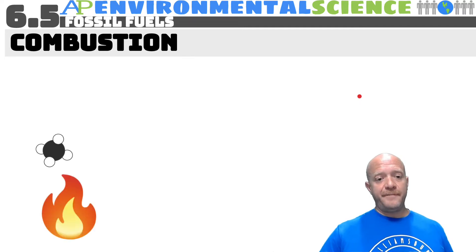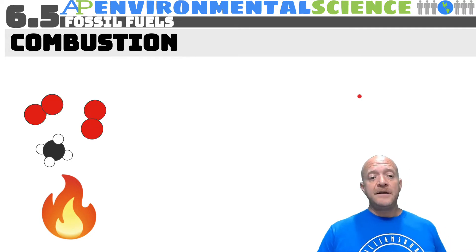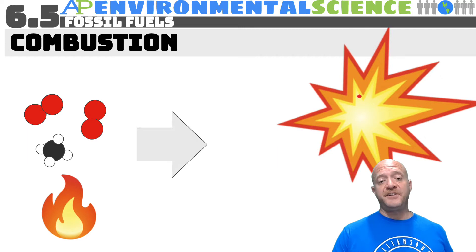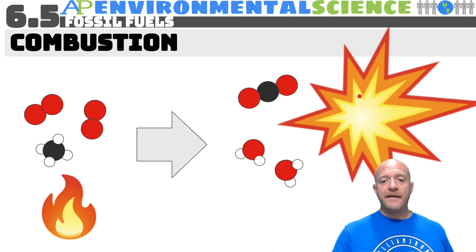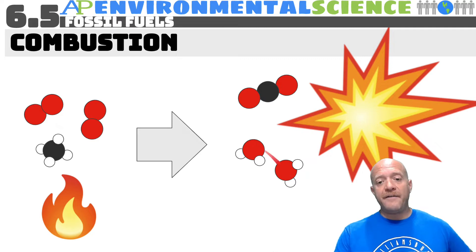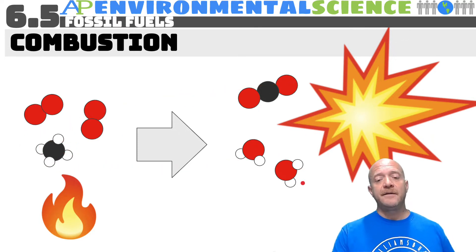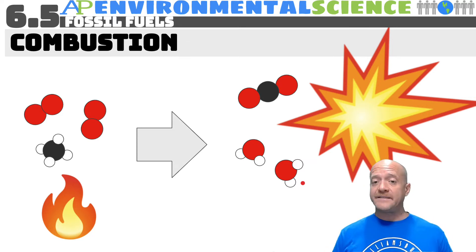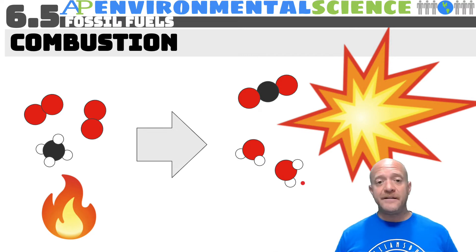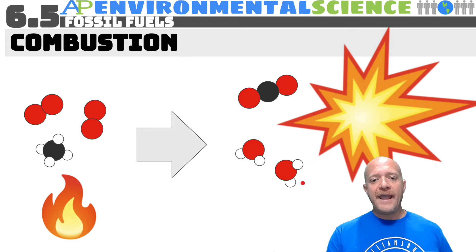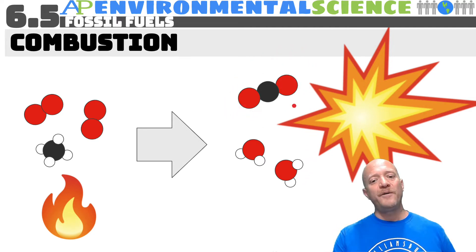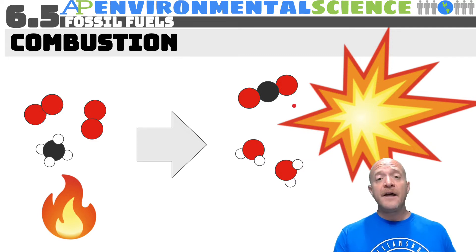When you burn methane, you have to have oxygen present. Burning methane plus oxygen gives you a lot of energy, but also water and carbon dioxide. This demonstrates conservation of matter: one carbon in, one carbon out; four oxygens in, four oxygens out; four hydrogens in, four hydrogens out. If you're burning pure methane, there are no pollutants or particulate matter released. The only problem is the carbon dioxide, and burning methane produces a lot less carbon dioxide than burning coal.